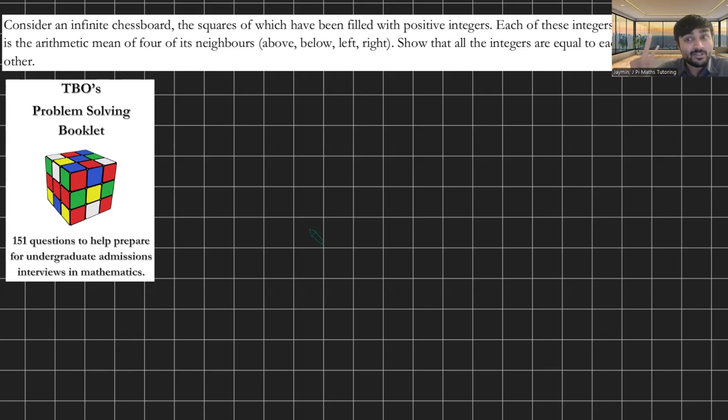I've got a really cool problem here which I'm going to solve in two different ways. We have an infinite chessboard, the squares of which have been filled with positive integers. You can see I've got this very nice grid paper here, so we could have something like this. But it has the property that each of these integers is the arithmetic mean of its four neighbors.